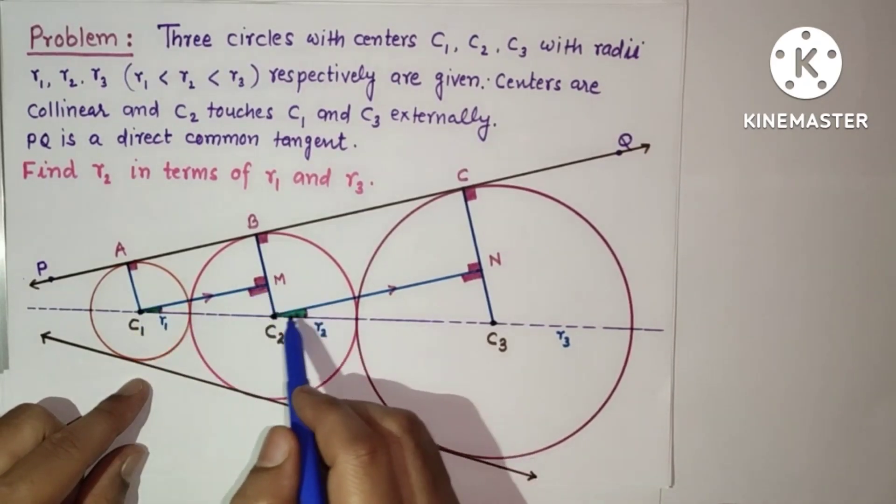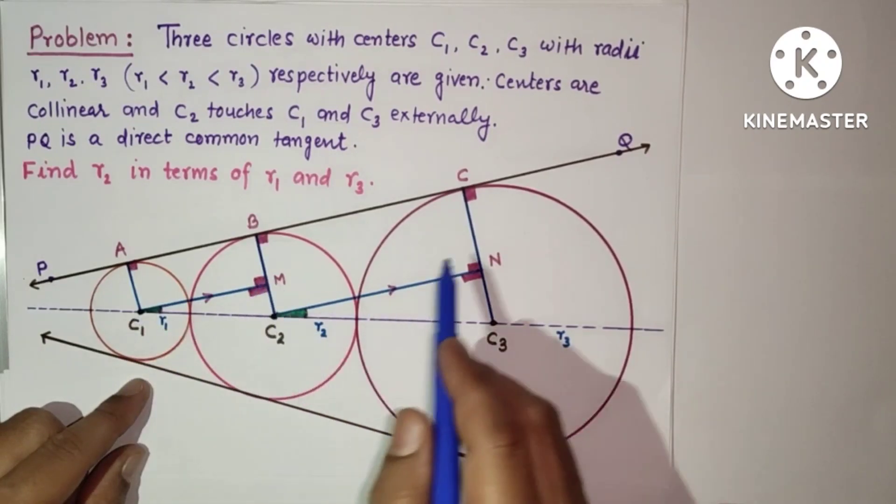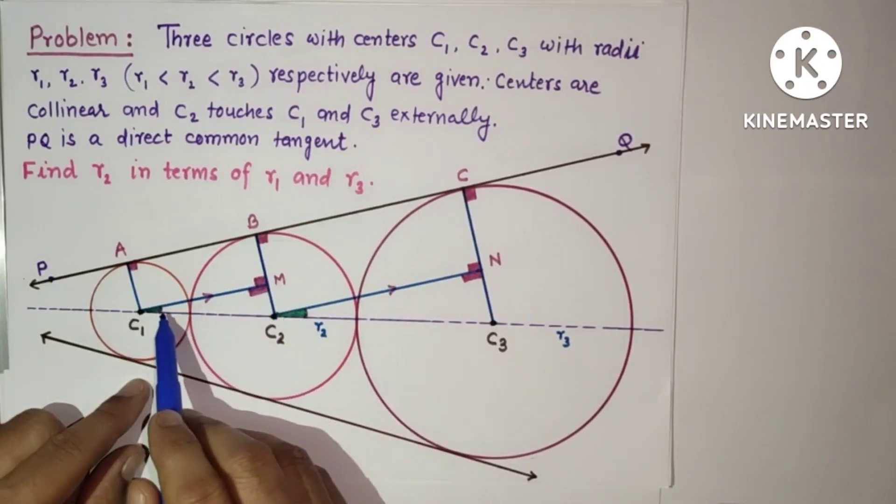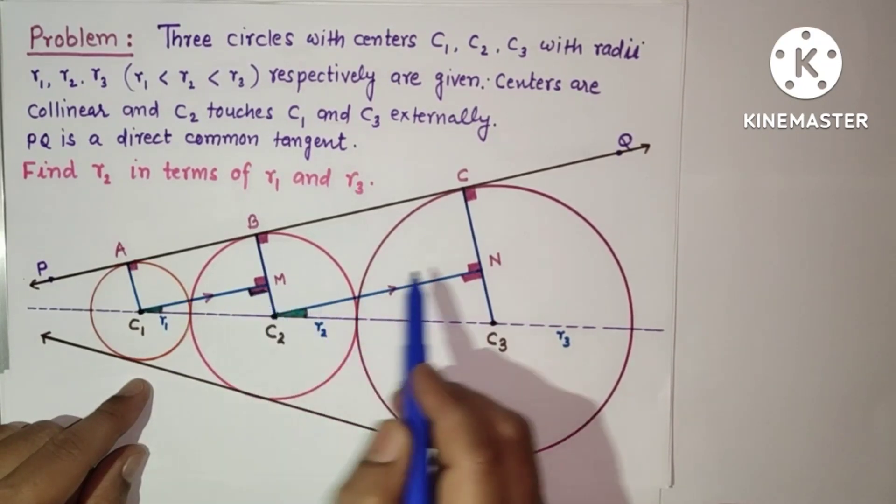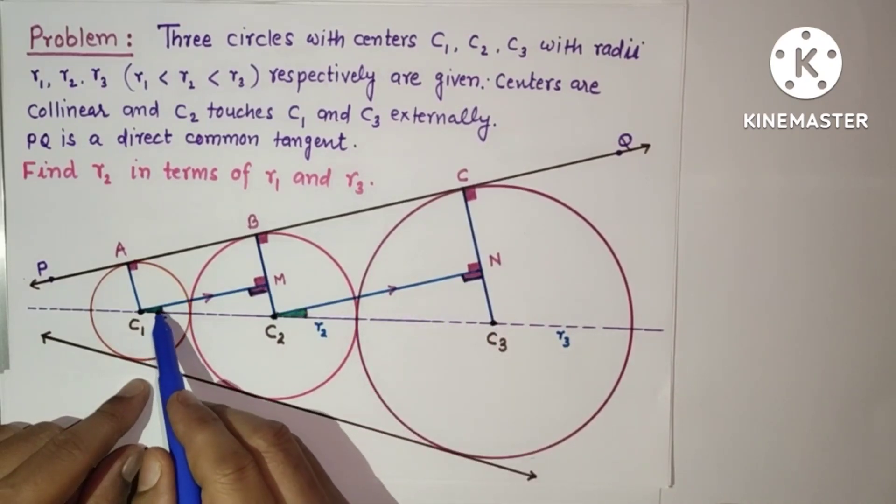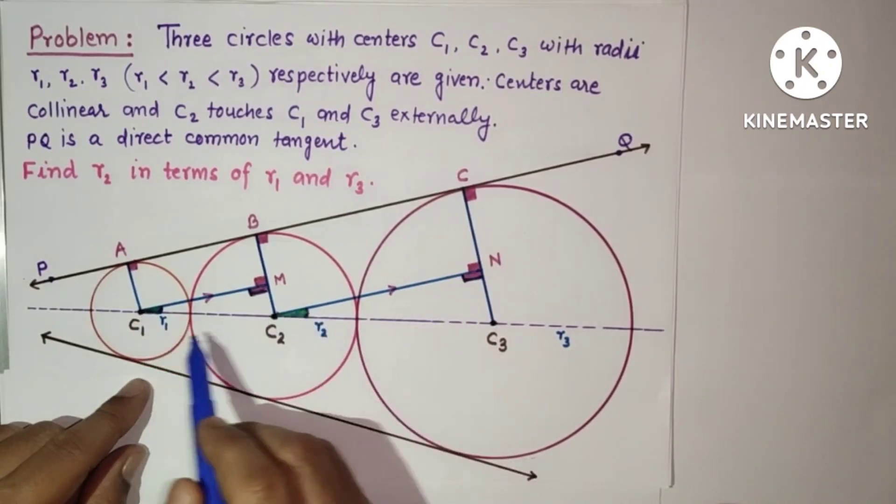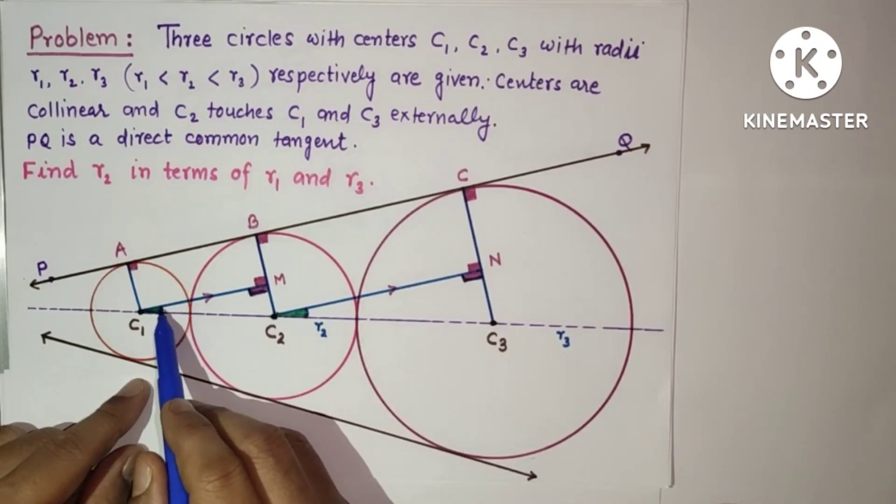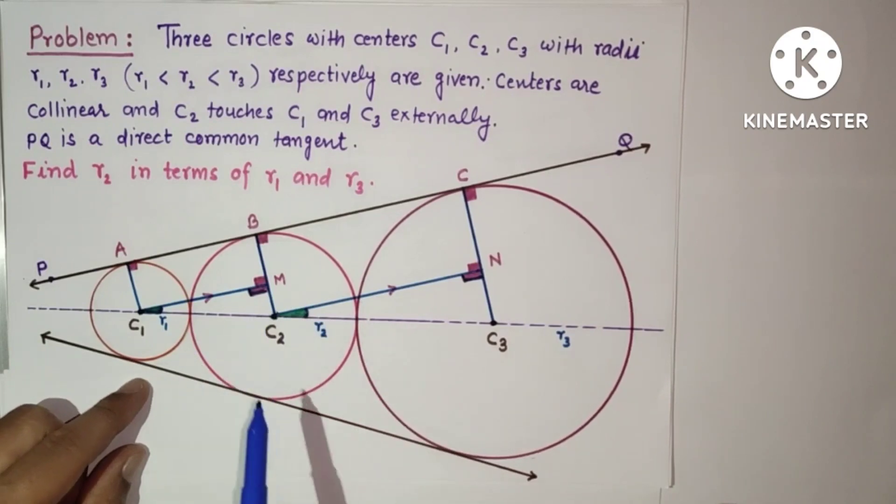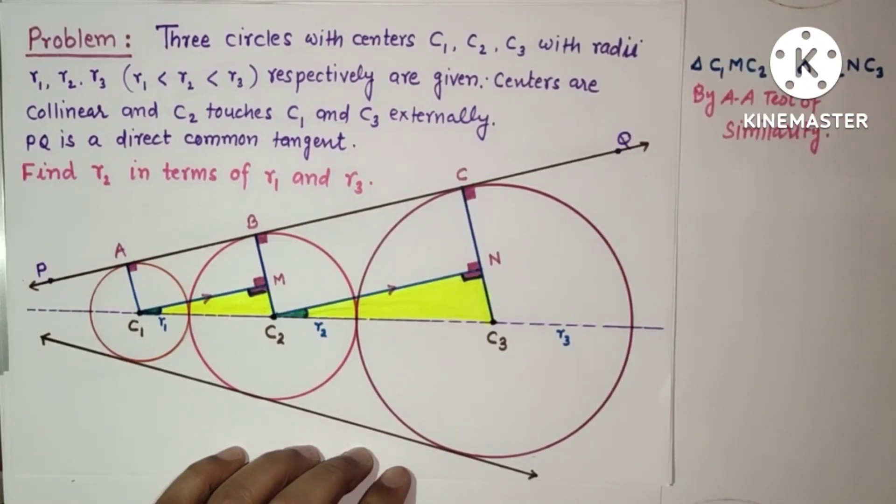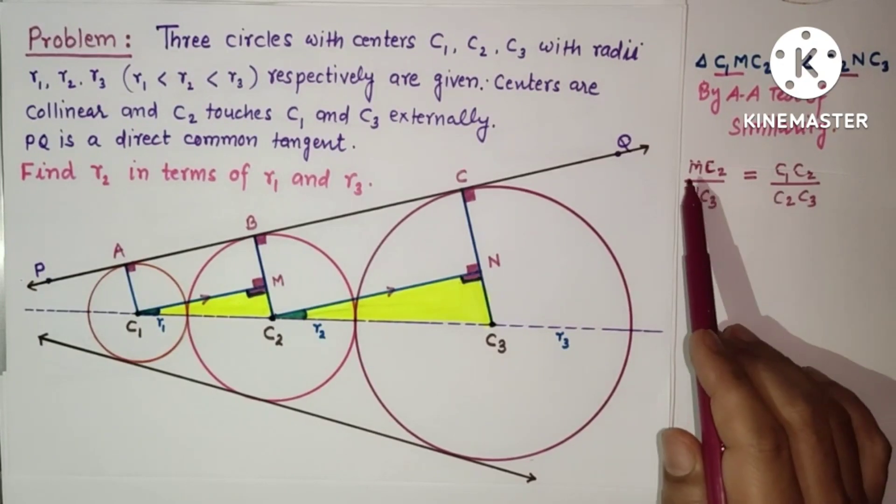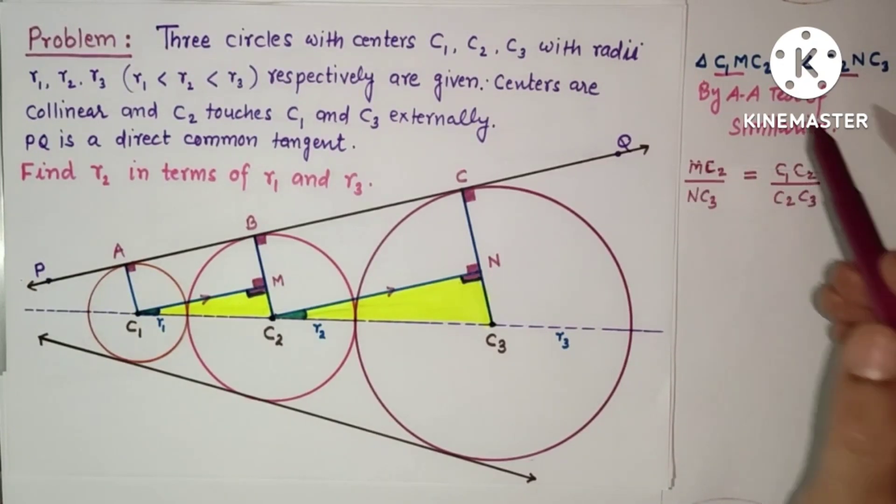These two triangles - now we are considering C1 and C2, and C2 and C3 - we are going to prove that these two triangles are similar. This angle is equal to this angle, each 90 degrees. This angle is equal to this angle by corresponding angles. So by AA test of similarity, these two triangles are similar, then corresponding sides will be proportional. We can say that MC2 by NC3 is equal to C1C2 by C2C3, since corresponding sides of similar triangles are proportional.